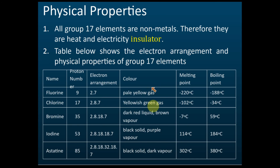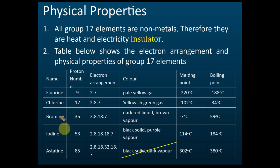You need to memorize their colors. Astatine is not important, so you don't need to memorize its color. For fluorine, chlorine, bromine, and iodine, the colors are important — except fluorine's pale yellow color is usually not asked. They will typically ask about the colors of chlorine, bromine, and iodine.